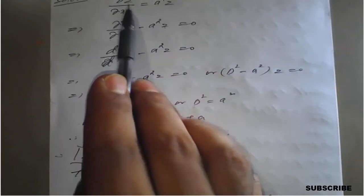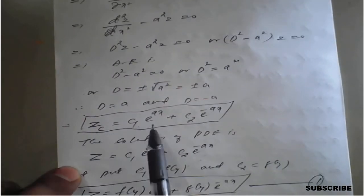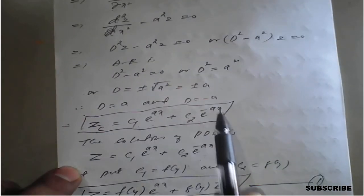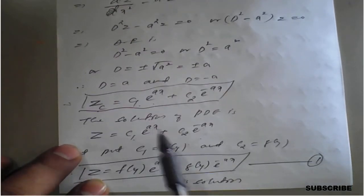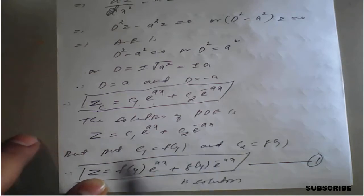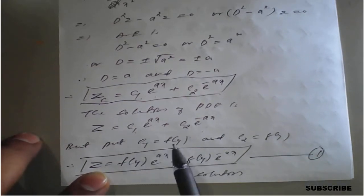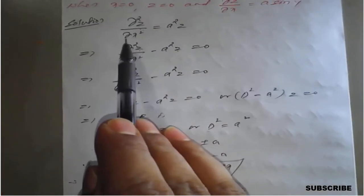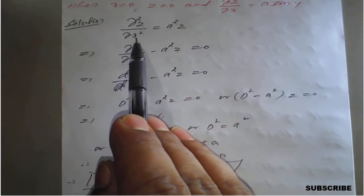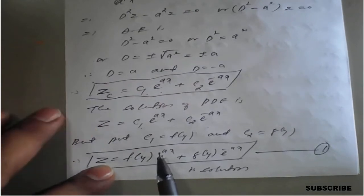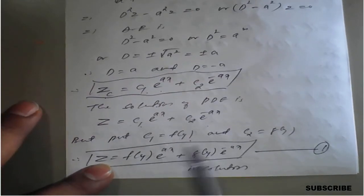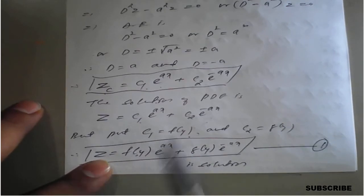Write the complementary function: z_c = c₁·e^(ax) + c₂·e^(−ax). The solution of the PDE is z = c₁·e^(ax) + c₂·e^(−ax), but replace c₁ with f(y) and c₂ with g(y), because this PDE is differentiated with respect to x, so the constants become functions of y.